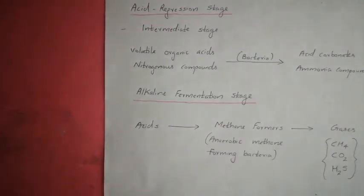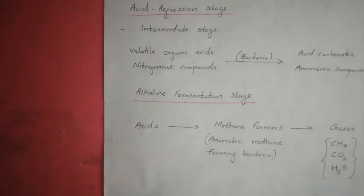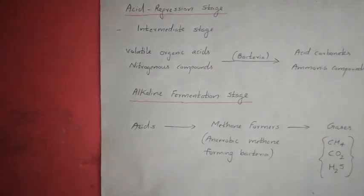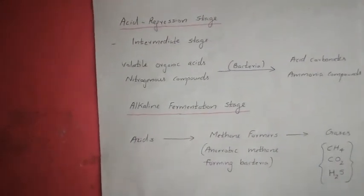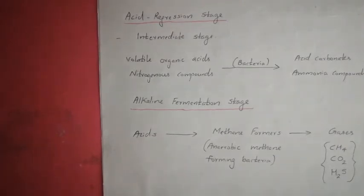The last stage is the alkaline fermentation stage, which is the final stage of sludge digestion. In this stage anaerobic bacteria convert the remaining volatile acids into gases such as methane, carbon dioxide, and hydrogen sulfide. These are the three stages of sludge digestion: acid fermentation, acid regression, and alkaline fermentation.